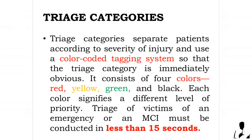Triage categories separate patients according to severity of injury and use a color-coded tagging system so that the triage category is immediately obvious. It consists of four colors: red, yellow, green, and black — each signifying a different level of priority. Triage of victims of an emergency or an MCI must be conducted in less than 15 seconds.